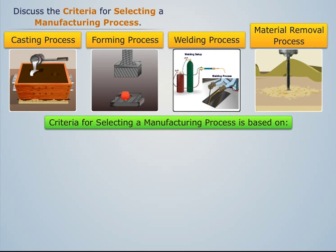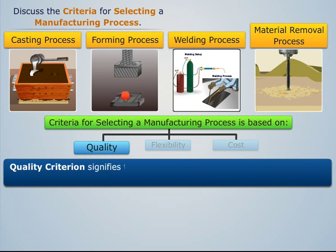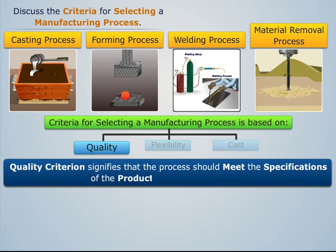The three main factors include quality, flexibility, and cost. The quality criterion signifies that the process should meet the specifications of the product to be manufactured.